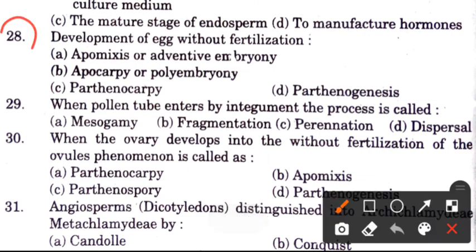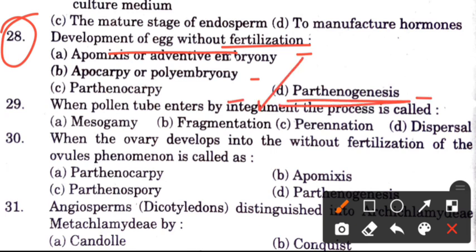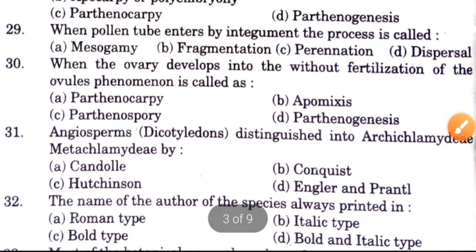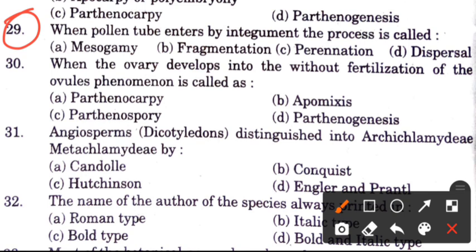Question 28: Development of egg without fertilization. Question 29: Penetration of the ovule entered from the integument — this process is called — options are mesogamy, fragmentation, perennation, and dispersal. The answer is A, mesogamy.